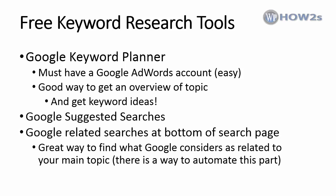For keyword research, Google gives us some free tools. We have the Google Keyword Planner — you'll need a Google AdWords account, which is easy to set up. Google Keyword Planner is a good way to get an overview of your topic and find keyword ideas. There's also Google suggested searches, which appear as you type a search phrase, and the Google related searches at the bottom of the search page, which are a great way to find out what Google considers related to your main topic and to come up with your silo's related topical pages.